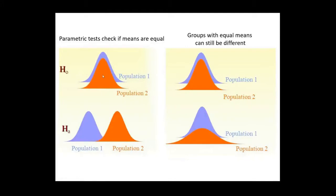You have your two groups, the blue and the orange one. The parametric test will check if the peaks of these two distributions are the same or if the peaks are different. You see that they are not the same here.